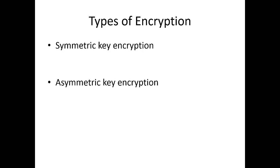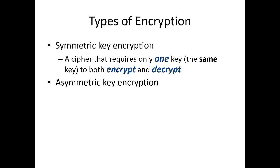There are mainly two different types of encryption. The first one is called symmetric encryption and the other one is called asymmetric encryption. When it comes to symmetric encryption, we're talking about only one key being used to both encrypt and decrypt. You can also say that it is a cipher that requires only one key — the same key to both encrypt and decrypt.